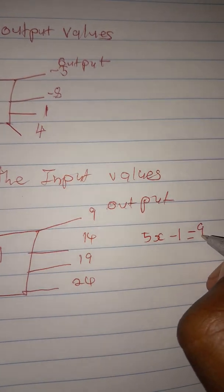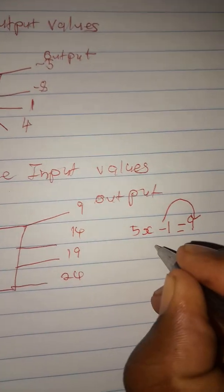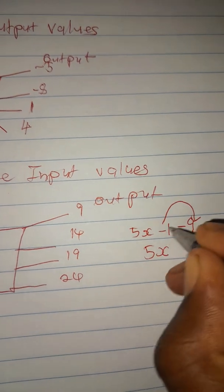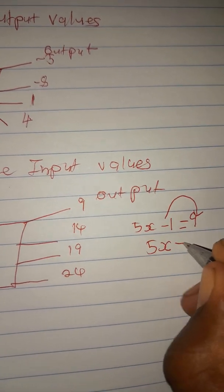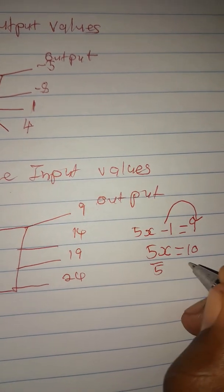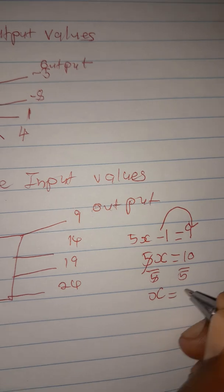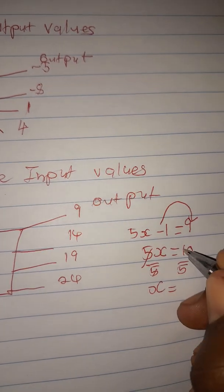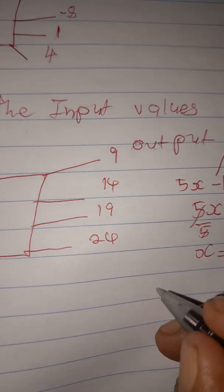Transposing negative one to the other side gives us nine plus one, which is ten, equal to 5x. Dividing both sides by five gives x equals two. For the next output, 14: five x minus one equals fourteen. Transposing gives 14 plus one equals fifteen, equal to 5x. Dividing both sides by five gives x equals three.